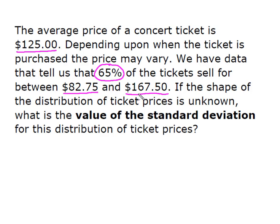The shape of the distribution of ticket prices is unknown, and what we want to find is the value of the standard deviation. In other words, we want to know how much or how many dollars sigma is, and so this is our unknown.